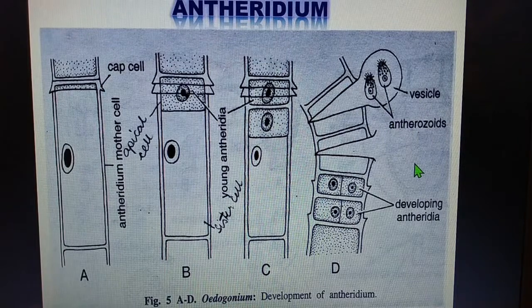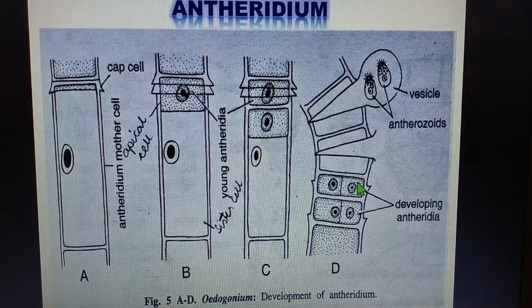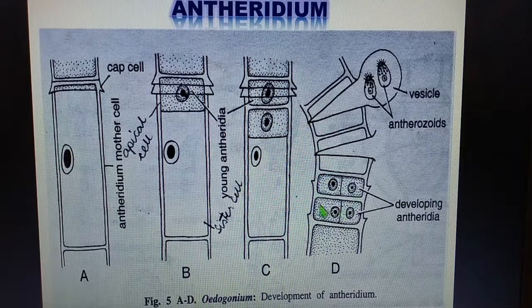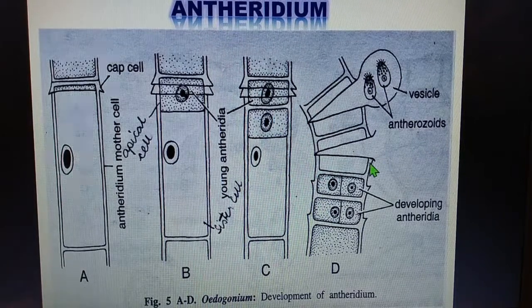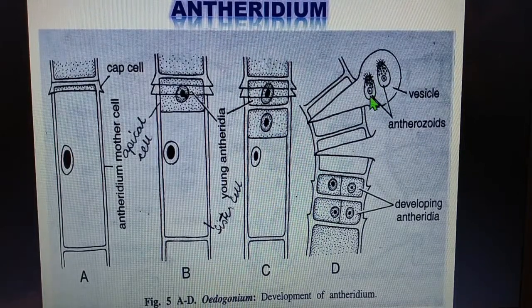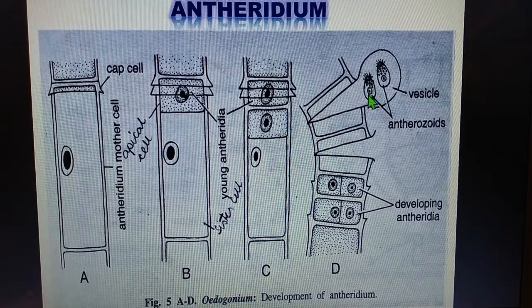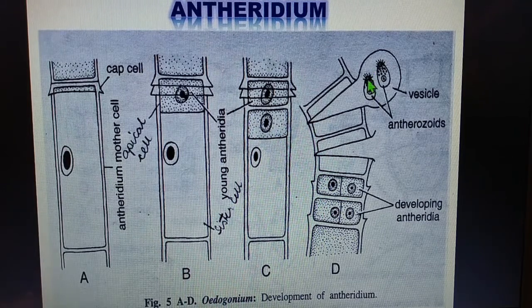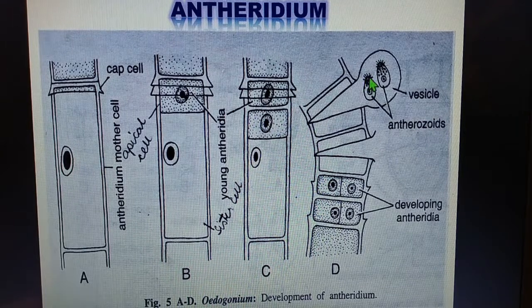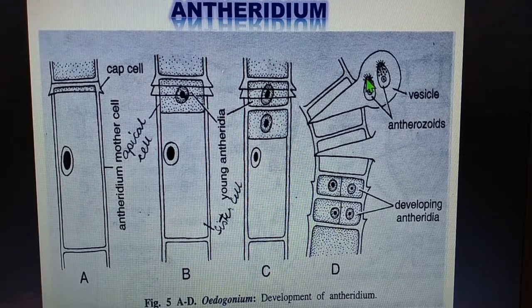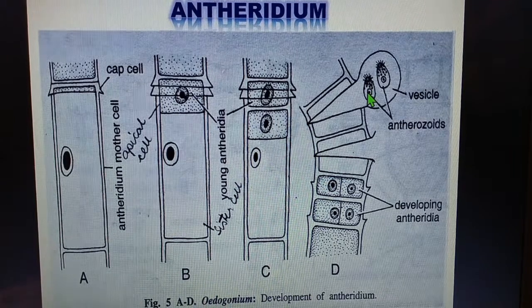In some species such as Oedogonium cardiacum, four antherozoids are formed in the antheridium, but in most Oedogonium species only two antherozoids are produced. The antherozoid is unicellular, uninucleate, and multiflagellate — you can see the flagella as the black structures shown.